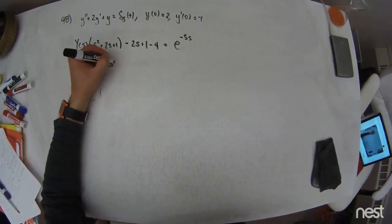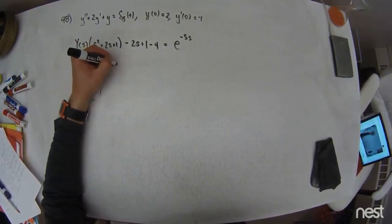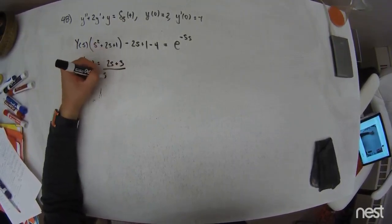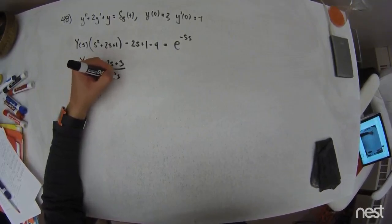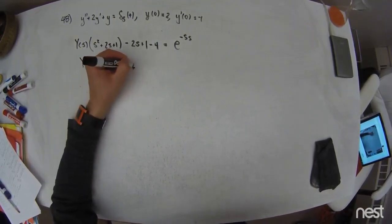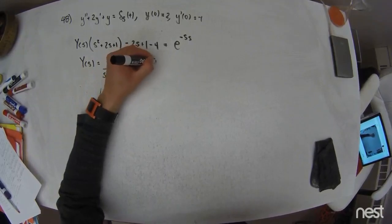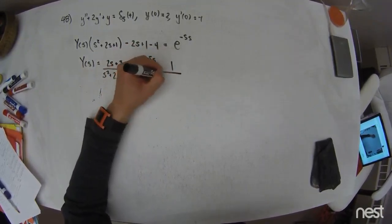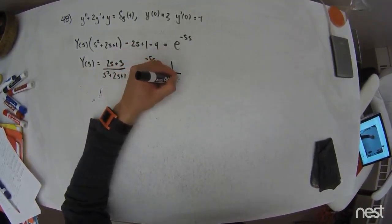So capital Y of S is equal to 2S plus 3 over S squared plus 2S plus 1 plus E to the negative 5S times 1 over S squared plus 2S plus 1.